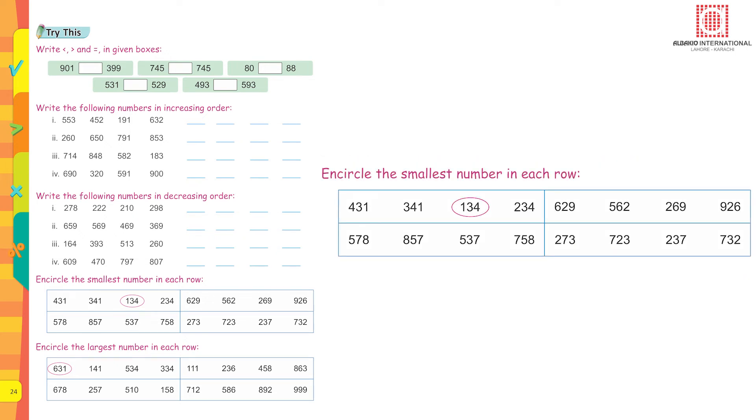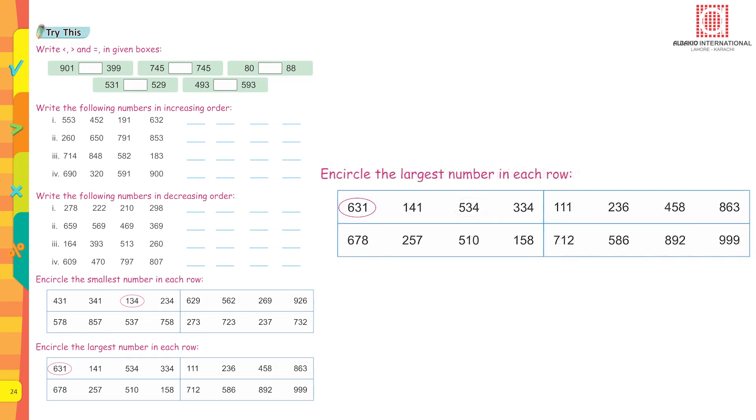Encircle the smallest number in each row. The first one has been done for you. Likewise, you do the remaining questions. Encircle the largest number in each row: 631, 141, 534, 334. 631 is the largest number. This has been done. Likewise, you are going to do the rest of the parts of this question.